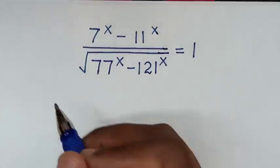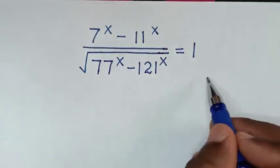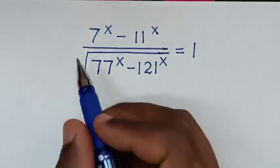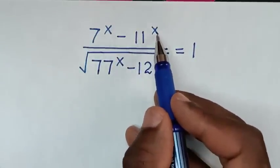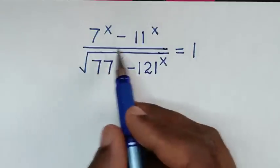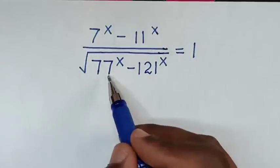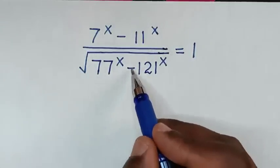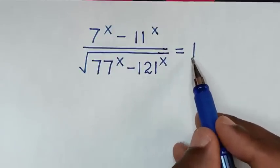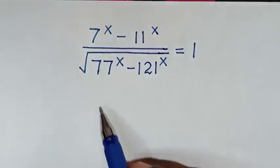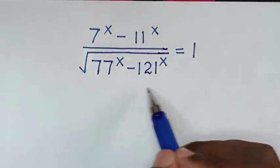Hello, you are welcome to solve this math problem: (7^x - 11^x) over the square root of (77^x - 121^x) is equal to 1. We need to find the values of x from this math problem.